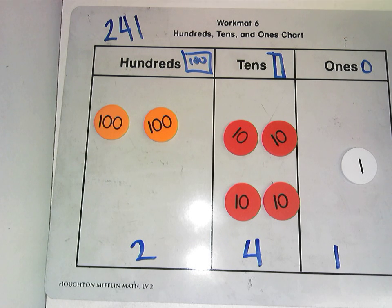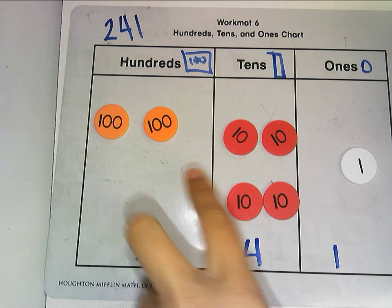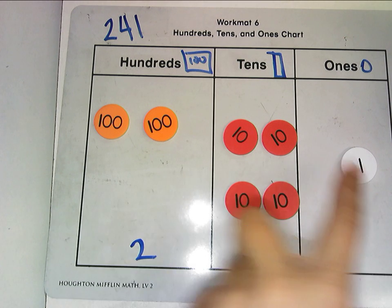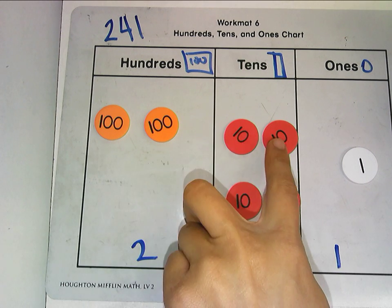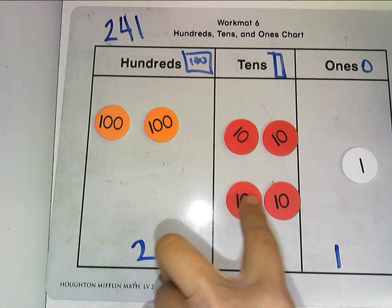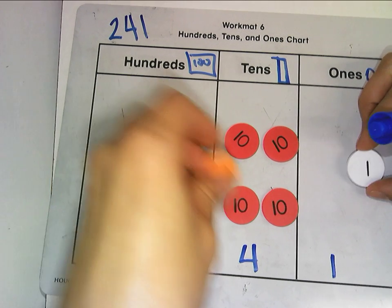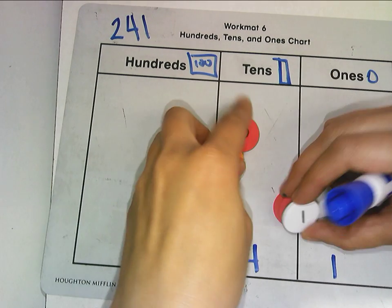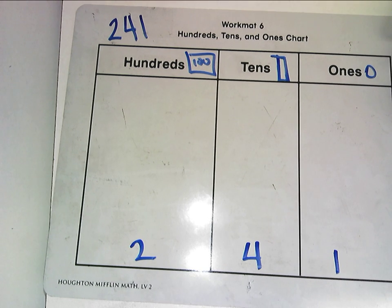And that's it. I have two 100's, four 10's, and 1. Counting up: 100, 200, 210, 220, 230, 240, 241. Pretty simple, right? You're also going to be using the disks, but you're also going to be using a sketch to sketch them.